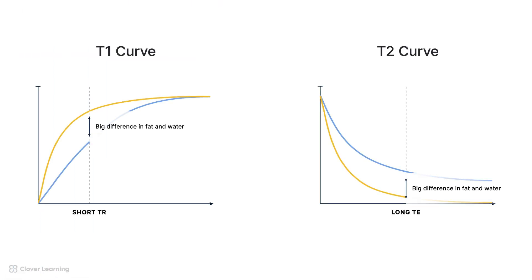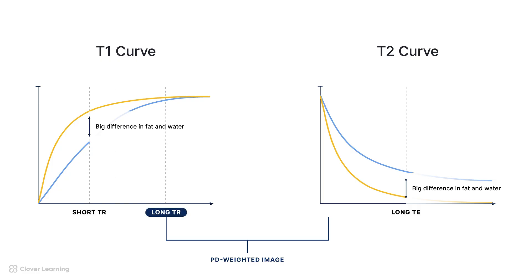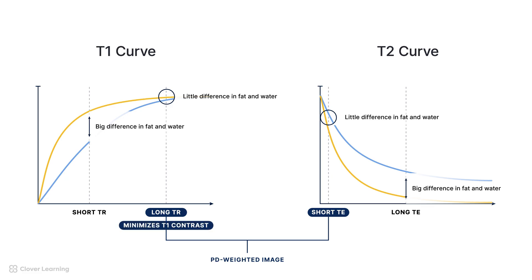In order to achieve a PD-weighted image, we will need to adjust both the TR and the TE. The TR must be kept long to allow the vectors of both fat and water to fully recover longitudinal magnetization, and the TE must be kept short to prevent the vectors of both fat and water from dephasing. A long TR minimizes T1 contrast, and a short TE minimizes T2 contrast.